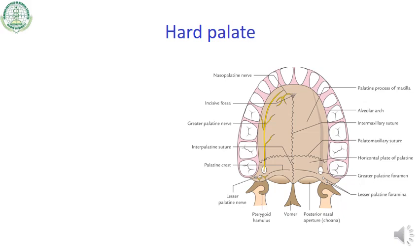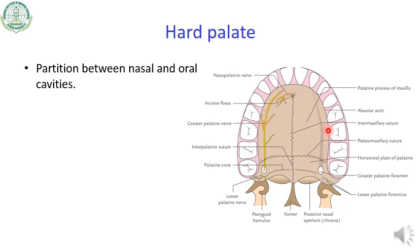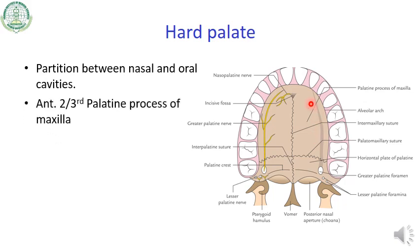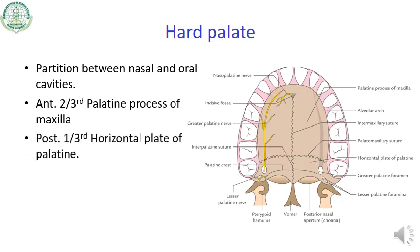Coming to the hard palate: the partition between the nasal and oral cavity is called the hard palate. You can make out in this diagram — this is the hard palate. The anterior two-thirds of the hard palate is formed by the palatine process of the maxilla on either side, while the posterior one-third is formed by the horizontal plate of the palatine bone.